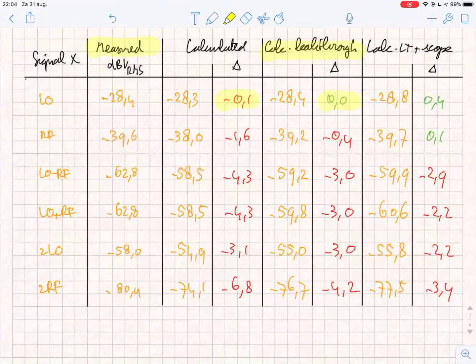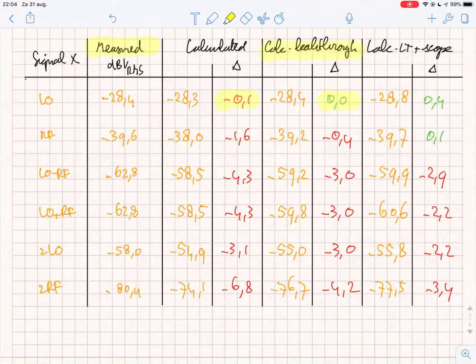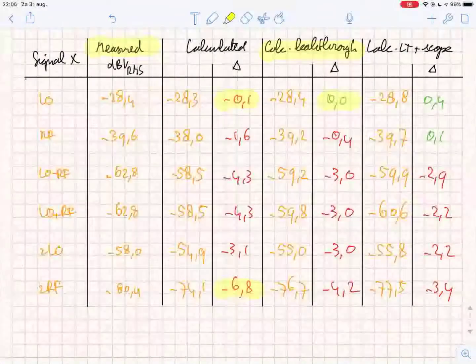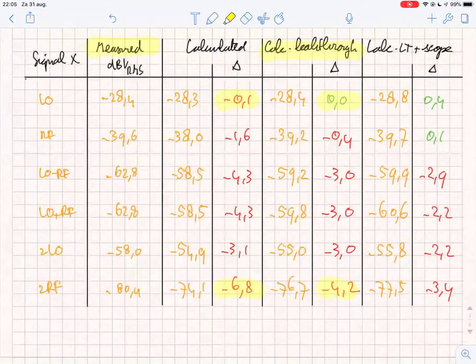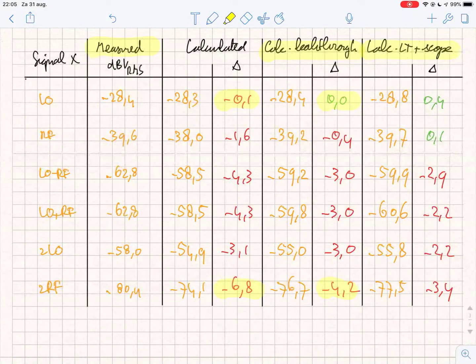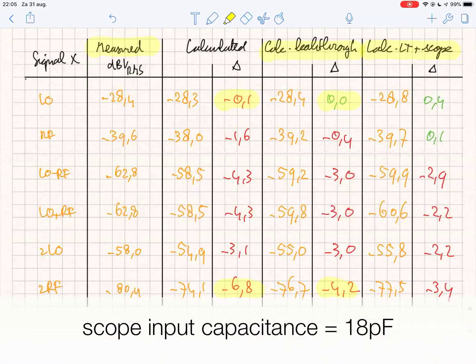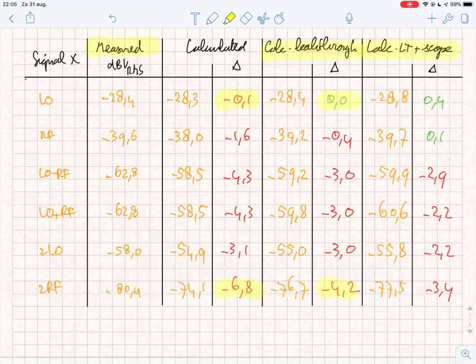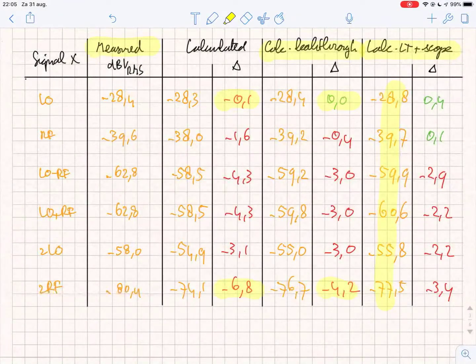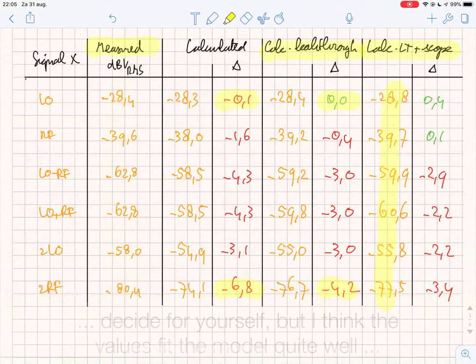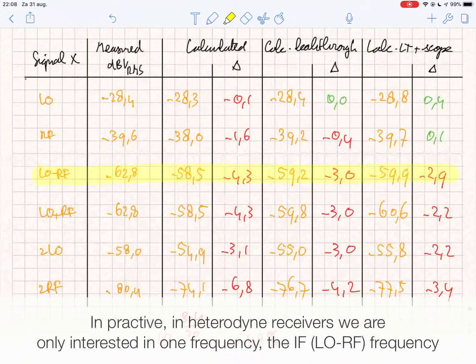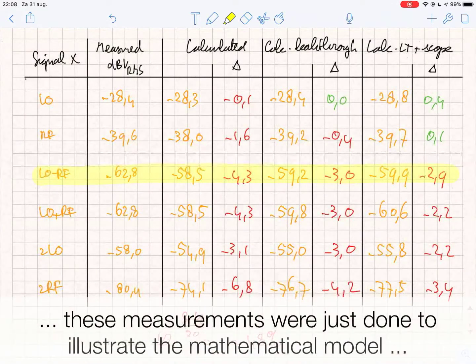Without any corrections, they vary from minus 0.1 to minus 6.8. Now they vary from 0 to minus 4.2. Also in this column I correct for the scope input capacitance. And for this it was also important to mention the LO and RF frequencies of course. And this will bring the measured values and the calculated values even closer. And we should focus on this frequency, the rest of the frequencies we should get them as low as possible. But only for the purpose of proving that the model is right, I did these measurements. I will also, in the beginning of the video I also promised you some extra material.